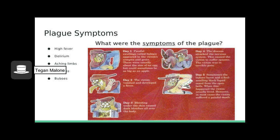Plague patients typically experience high fever, delirium, aching limbs, seizures, and buboes — swollen lymph nodes prone to bursting after a few days. These buboes may heal in some; however, in others, internal bleeding may occur, producing black spots on the extremities called gangrene, that can lead to fatal ulcers.